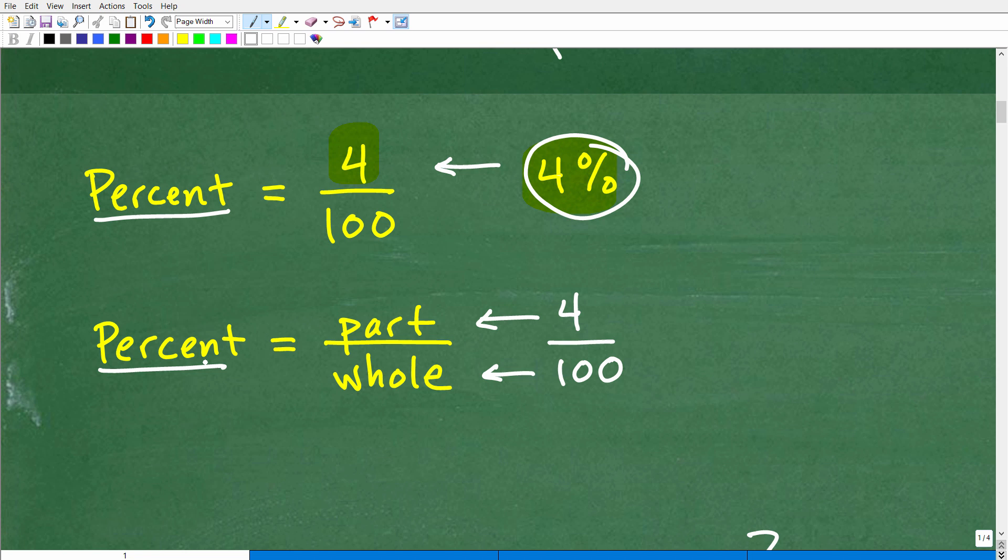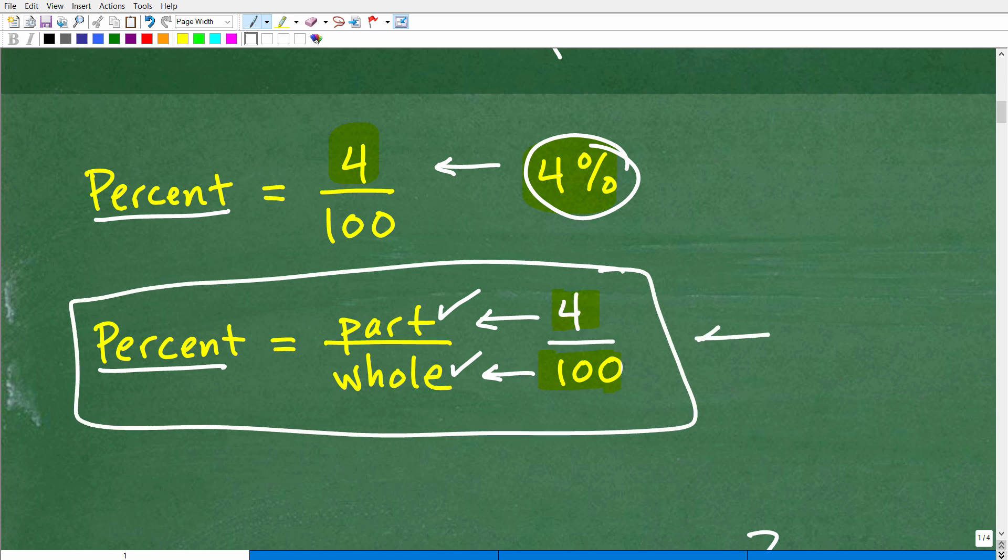There's a way you could think about percent that comes in very handy, and this is the way we need to think about it for this particular problem: percent is some sort of part out of a whole. This is a good construct, a mental way to think about percent. What part out of 4 is what part out of the entire whole of 100? Well, it's 4 percent. Thinking of it in terms of some part out of a whole is another good way to think of percent.